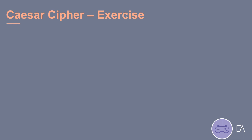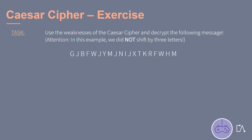It's your turn again. Use the weaknesses of the Caesar Cipher to decrypt the message by breaking the code. First of all, find the right number of letters by which it was shifted. Note that this time, it is not three letters.